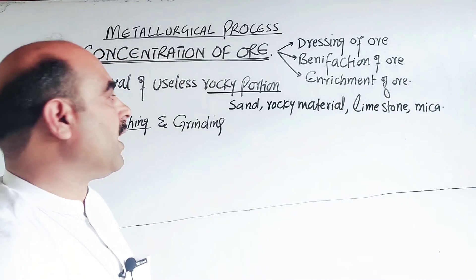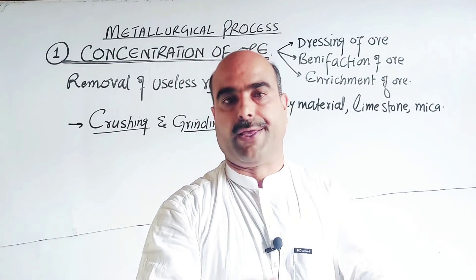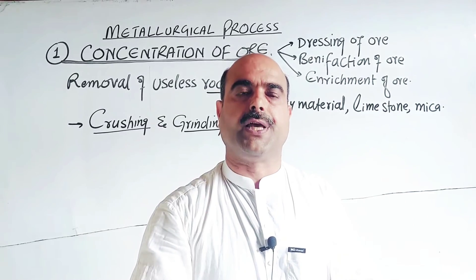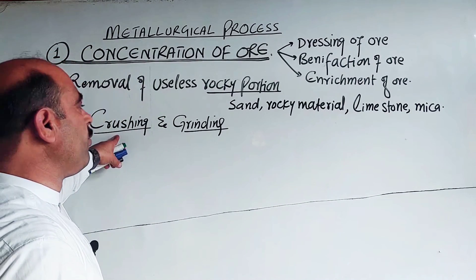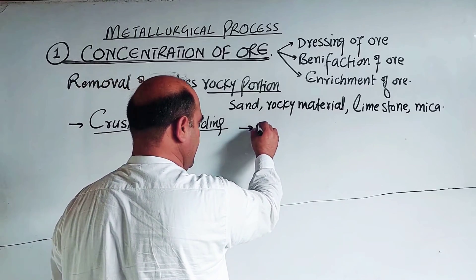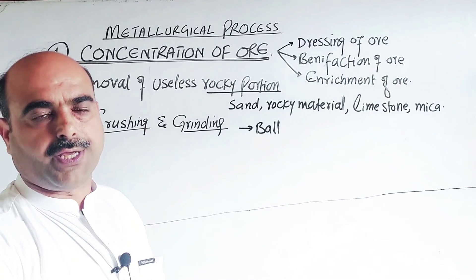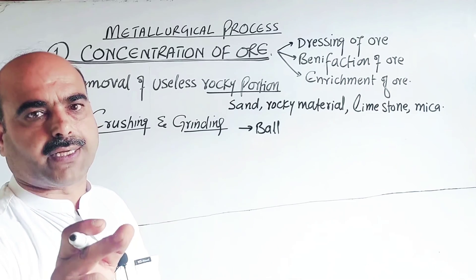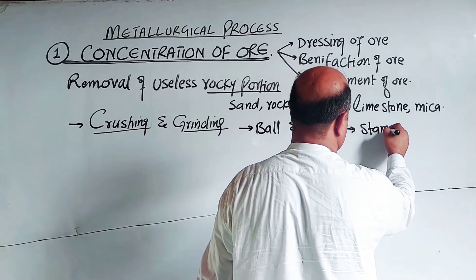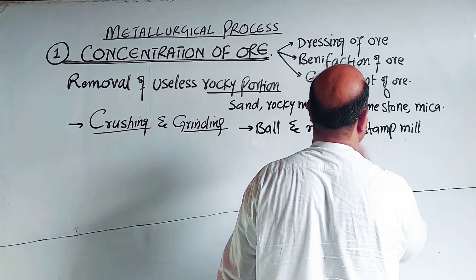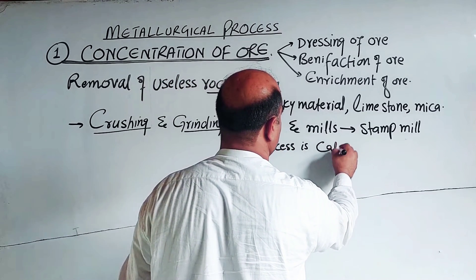Grinding means reducing the small pieces further into powder form. This is done using ball mills — machines with round balls that crush and cut the small pieces. There are also stamp mills, also called stem mills. This overall process is known as pulverization.